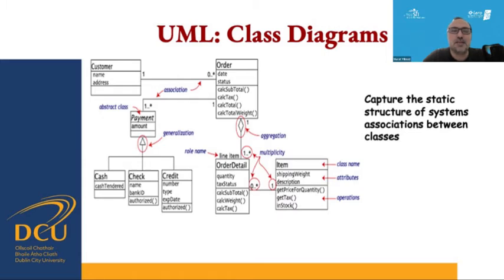Orders need to be paid and there should be a relationship with the payment class. Our payment class is an abstract class which has three different types of payment: cash, check, and credit. The amount can be a common state for all these different types, but each type of abstract class may have unique states as well as different functionalities like authorization. For cash, authorization is probably not needed, but for check and credit it could be a possibility.